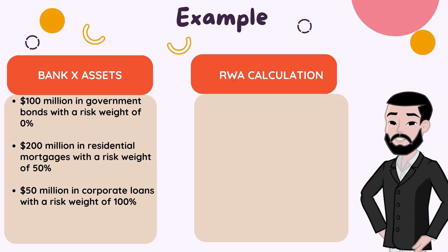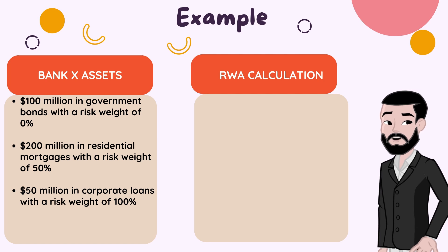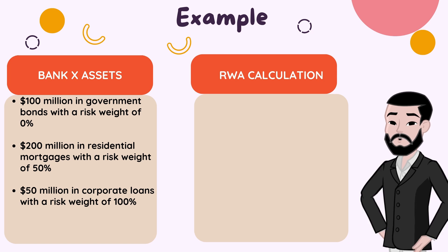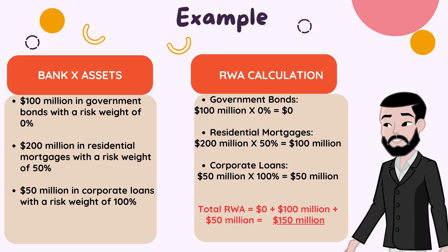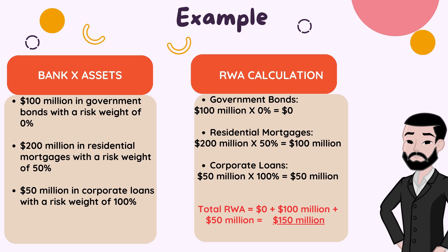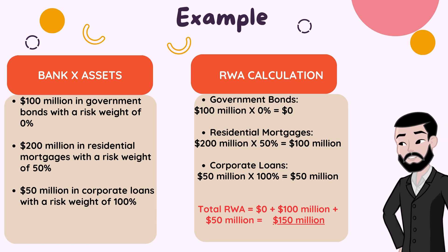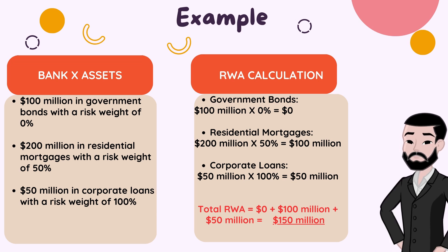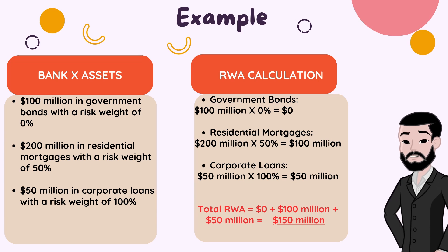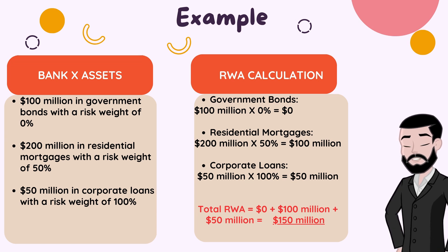Let's go through a simple example. Suppose a bank has the following assets: $100 million in government bonds with a risk weight of 0%; $200 million in residential mortgages with a risk weight of 50%; and $50 million in corporate loans with a risk weight of 100%. Here's how we calculate the RWAs. Government bonds: $100 million × 0% = $0. Residential mortgages: $200 million × 50% = $100 million. Corporate loans: $50 million × 100% = $50 million. Add them up and you get a total RWA of $150 million, meaning the bank needs to hold capital proportional to this $150 million to ensure financial stability.